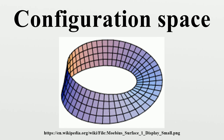Configuration space in physics: The position of a single particle moving in ordinary Euclidean three-space is defined by the vector r, and therefore its configuration space is R³. If the particle is constrained to lie on a sphere, then its configuration space is the subset of coordinates in R³ that define points on the sphere S². For n particles the configuration space is R³ⁿ, or possibly the subspace where no two positions are equal.